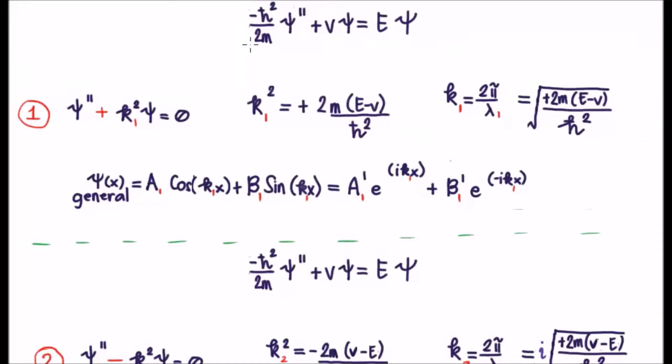In summary, we have the time independent Schrödinger equation in this form here. We can gather the constants together in two different ways. The first way is defining them as 2m(E-V)/ℏ² which I'll call k₁² for short.